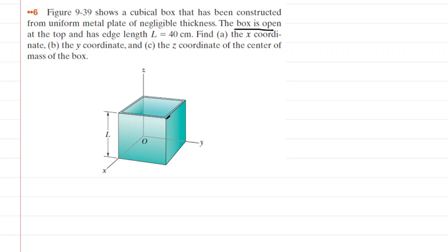Next, we will outline the right side of the box. The question notes that the box has been constructed from uniform material. So if we look at the right side and ask where the center of mass would be located, it would be located in the geometrical center of that square, basically right there.